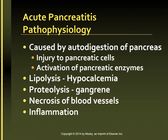Pathophysiology: The most common pathogenic mechanism is autodigestion of the pancreas. Etiological factors cause injury to pancreatic cells or activation of the pancreatic enzymes in the pancreas rather than in the intestine. This may be due to the reflux of bile acids into the pancreatic duct through an opening or distended sphincter of Oddi, which may be caused by blockage from gallstones. Obstruction of pancreatic ducts results in pancreatic ischemia.